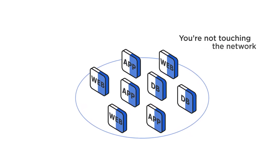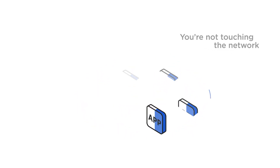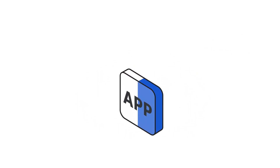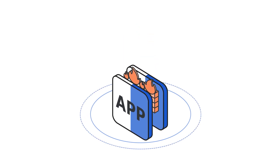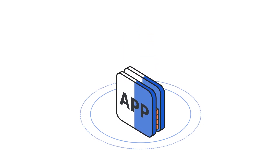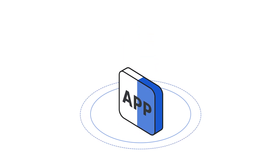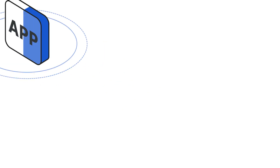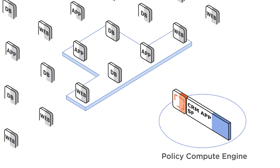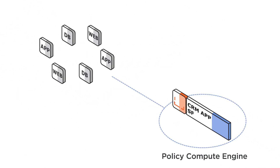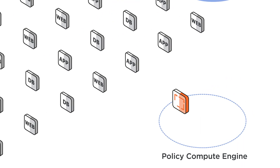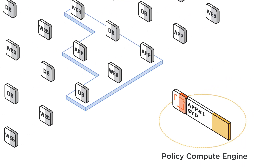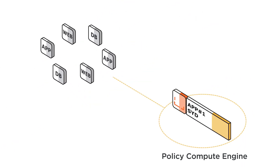One where you can set and make policy changes without worrying about breaking the network, because you're not even touching the network. Illumio Core utilizes the host-based firewalls you already own, not the firewall tied to your network. The brain of Illumio Core is its policy compute engine, which gives you the visibility you need to write clear, label-based policy in plain language. Just like that.